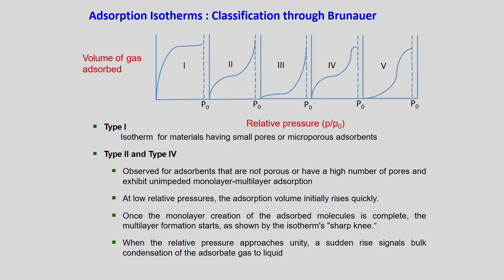Type 1 isotherm is for materials having small pores or microporous adsorbents. As you increase the pressure, the volume increases and then becomes horizontal — indicating a monolayer is already formed. Once horizontal, adding more molecules does not result in further adsorption because equilibrium and saturation have been reached.